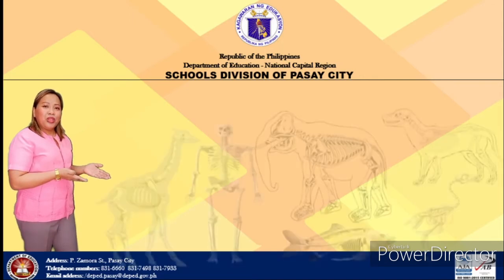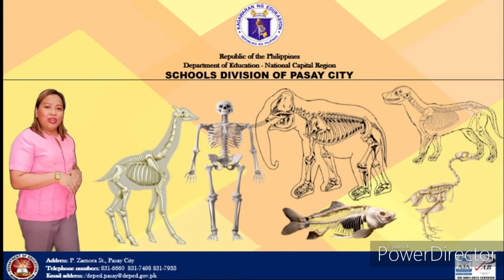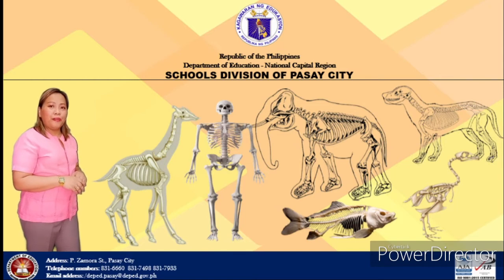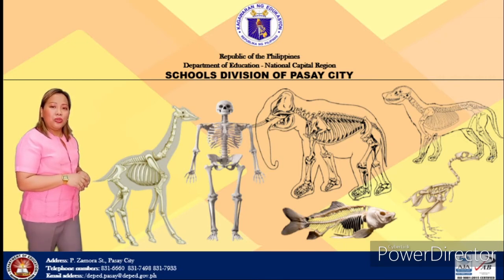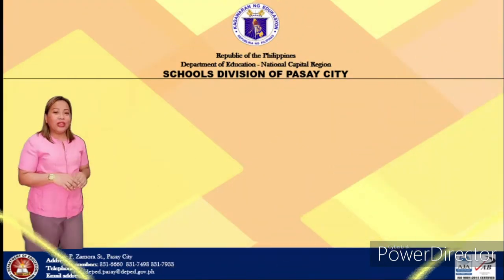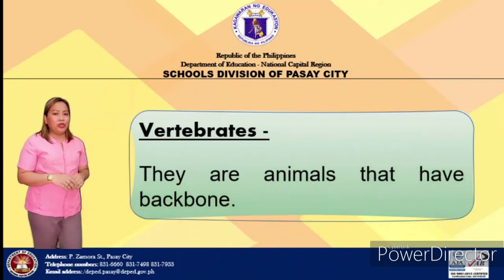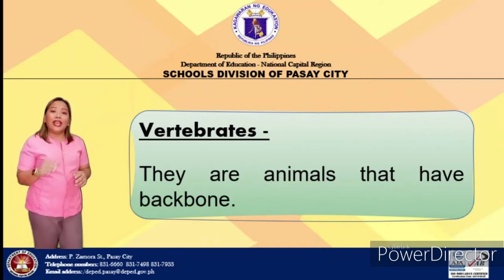Look at the pictures. What animals are shown here? What is common to all of them? The animals in the picture are different, but what is common among them? Did you say the presence of the backbone? Yes! These animals whose skeletons are shown here belong to the group of vertebrates. Vertebrates are a group of animals that have backbone. The backbone provides structural support and houses the spinal cord, and at the end of the spinal cord is the enlarged brain.